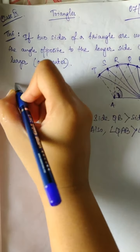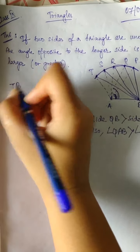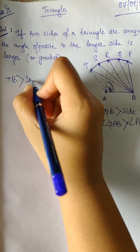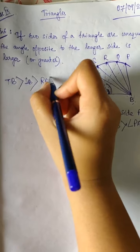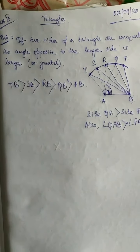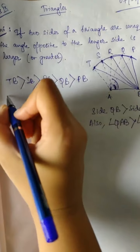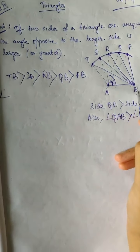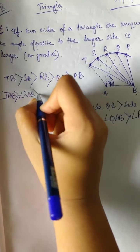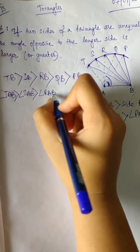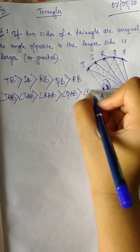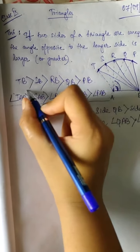So let us write it down. TB is the longest side, and it is greater than SB, which is greater than RB, which is greater than QB, which is greater than PB. Also we can say that angle TAB is the largest, then angle SAB, then angle RAB, then angle QAB, and the smallest is angle PAB. So we can conclude this from the diagram.